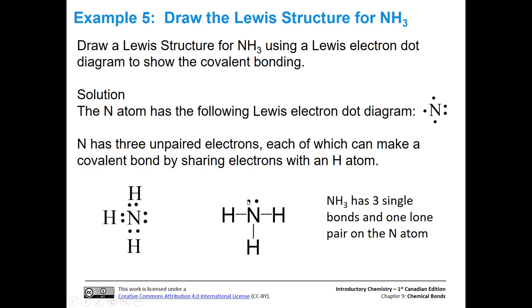We turn those two dots into lines, and I rearranged this just a little bit. I put the lone pair on top, and now we have ammonia. This is the Lewis structure for ammonia. It has three single bonds and one lone pair.